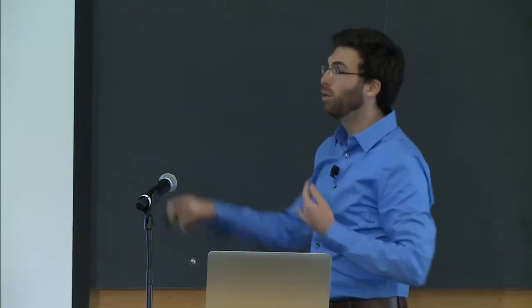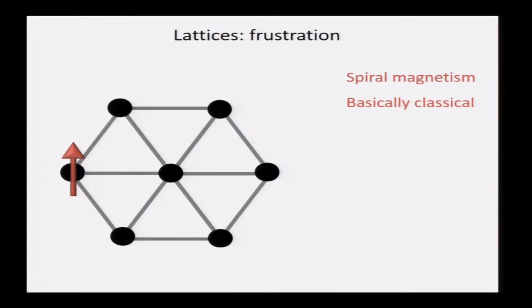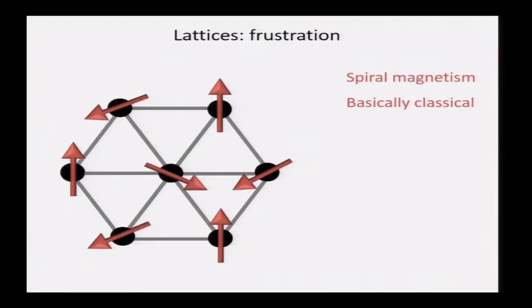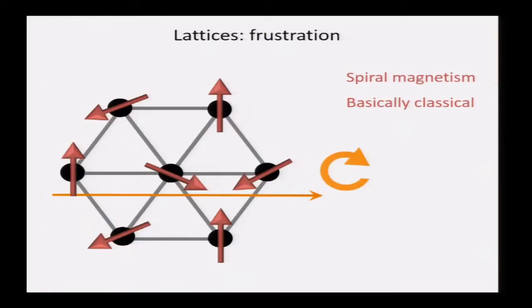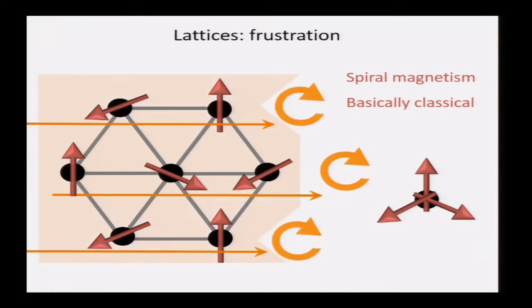It turns out that if you just look at a triangular lattice with a typical interaction, that's not enough to get an entangled state — what you get is still a classical state, in numerics or in materials where this is the appropriate model. What you get is a spiral-type configuration: looking at the center row, you start with an up spin and as you go right, the spins rotate clockwise. The same thing happens with the other rows — everything rotating the same way, some spiral rotating clockwise.